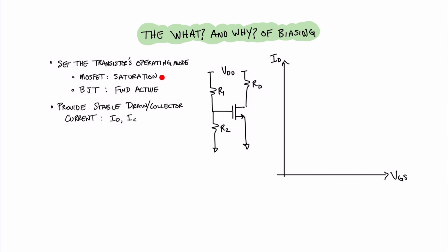One of the reasons that we bias a circuit is to put it in a particular operating mode. In the case of a MOSFET, we want to put it in saturation mode for amplification, and for a BJT, the equivalent mode is forward active. One of the main benefits of biasing a circuit is to provide a stable drain or collector current value. Over here in the middle, we find a nearly four-resistor biasing circuit, but it's missing the source resistance. In the case of a BJT, it would be the emitter resistor.